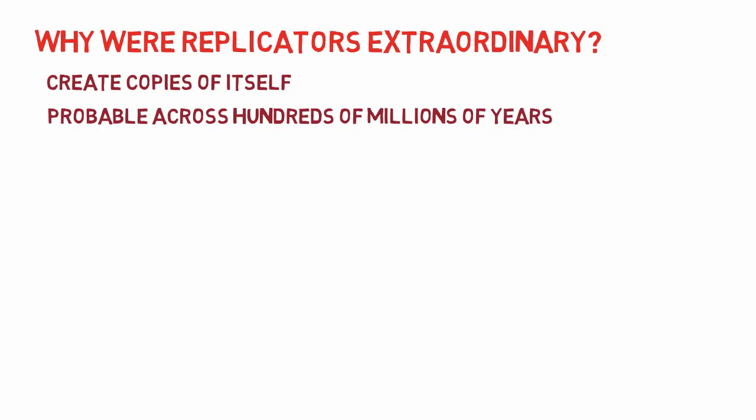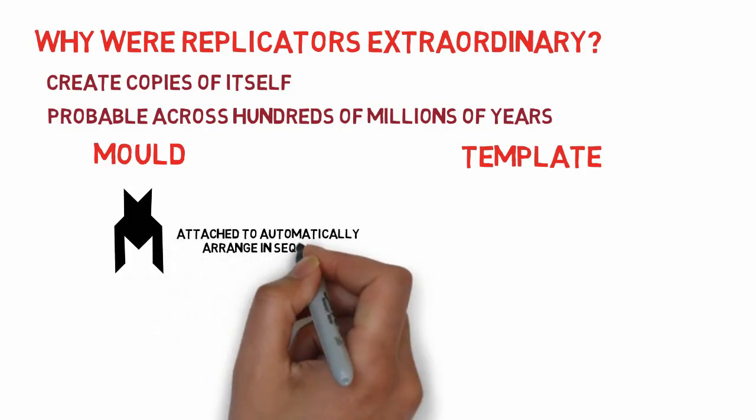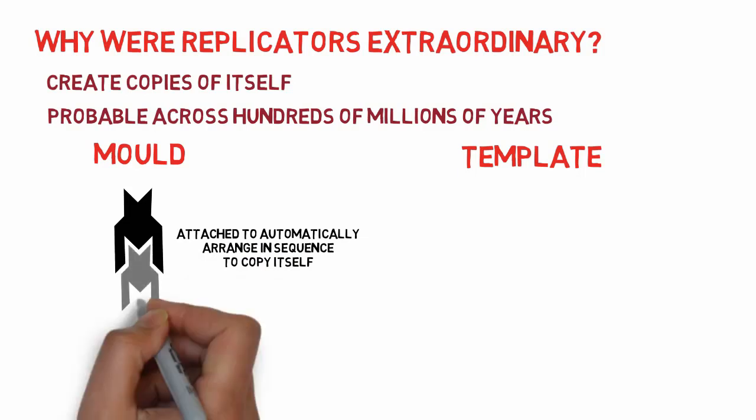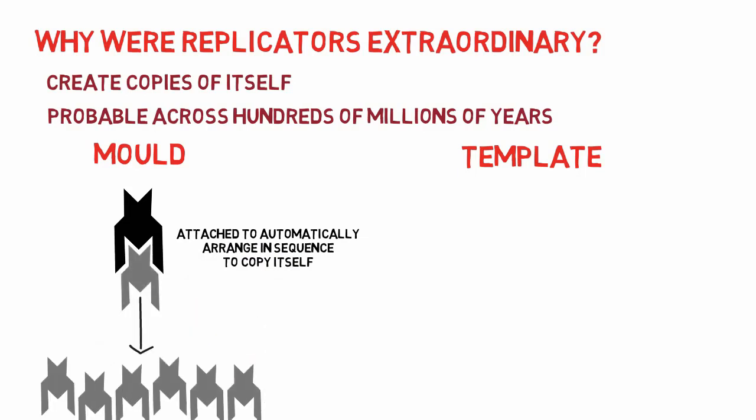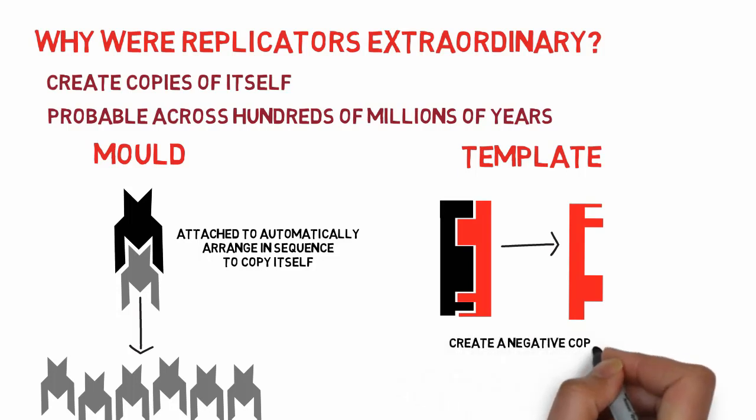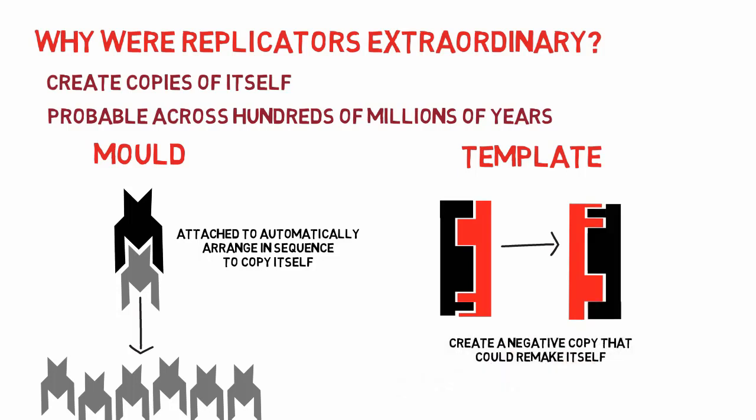Dawkins argues that replicators can be thought of like a mold or template. As a mold, it would be a large molecule consisting of chains of building blocks that attracted other building blocks available in the primeval soup. The building blocks attached in this way would automatically arrange in a sequence that mimics that of the replicator, and therefore create a copy. The other possibility is that each building block had an affinity not for its own kind, but reciprocally for another kind. The replicator would then act like a template, not for an identical copy, but a kind of negative copy that would remake the exact copy of the original.